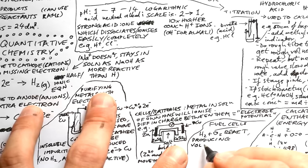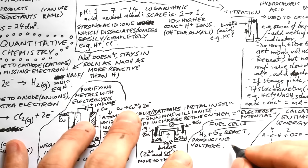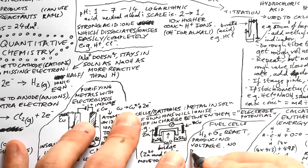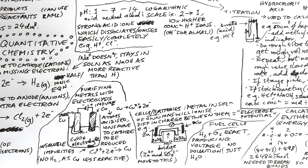Fuel cells have two tanks — one containing hydrogen and one containing oxygen. They react slowly to produce a voltage. The great advantage of hydrogen fuel cells is that they don't produce carbon dioxide — only water vapor, which is technically a greenhouse gas but far less problematic. That covers all of GCSE chemistry paper one — if you think anything's been missed, put it in the comments, and check out the other paper videos before your exams.